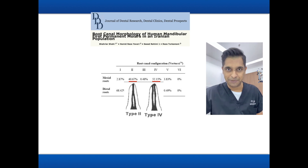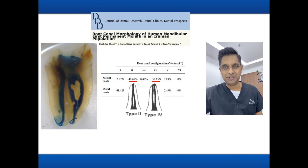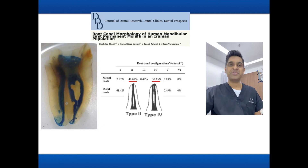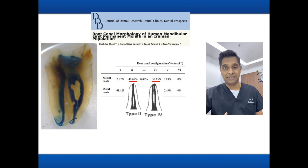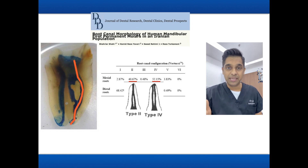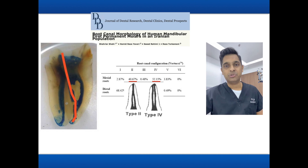Looking at this extracted tooth, you can clearly see it has a confluent canal — the mesial root has confluent canals. Tracking the mesial buccal canal, you can see it takes multiple curvatures. The mesial lingual canal, on the other hand, is much better — not perfectly straight, but with very limited curves.